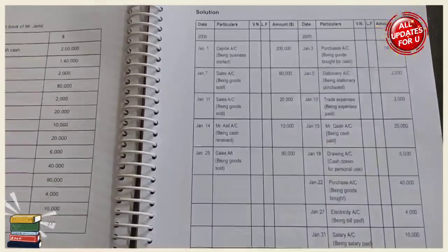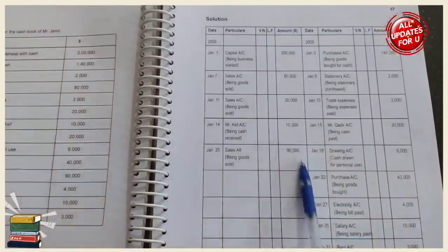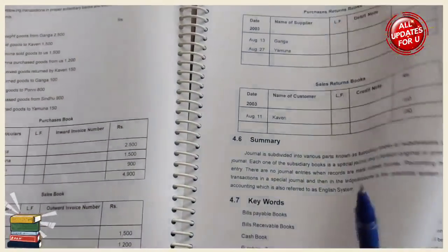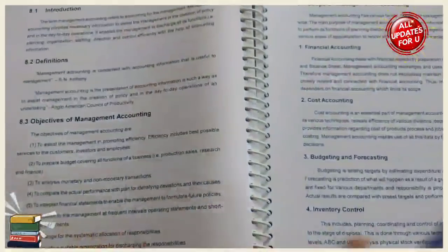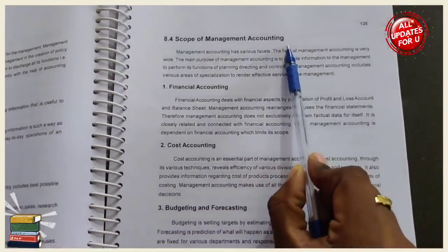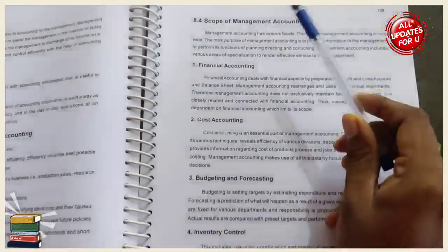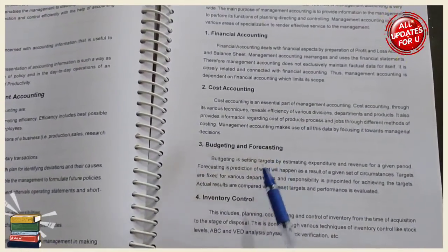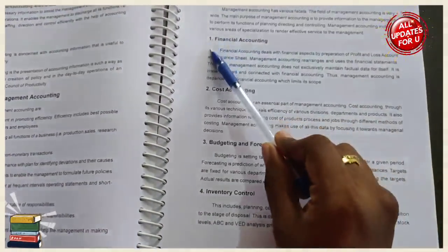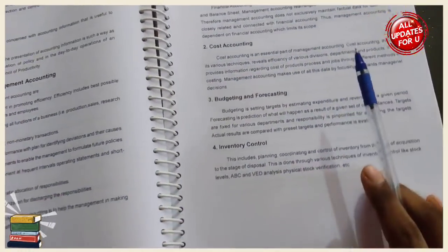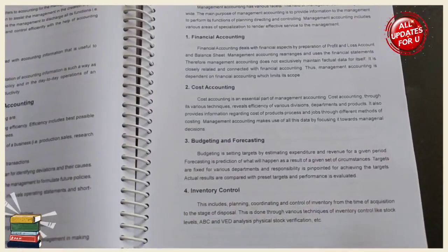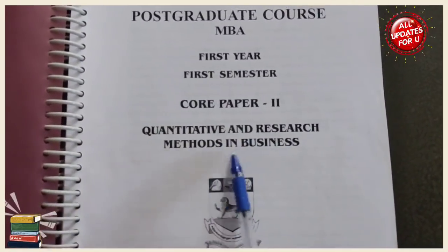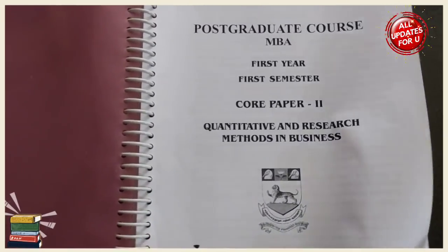Look to find the account sheet and be able to write the account sheet. Check the model questions — if you find the theory questions you can write about the scope of management accounting. See the headings in mind: financial accounting, cost accounting, budget and forecasting, inventory control. You can see the chance of 20 or 15 marks.